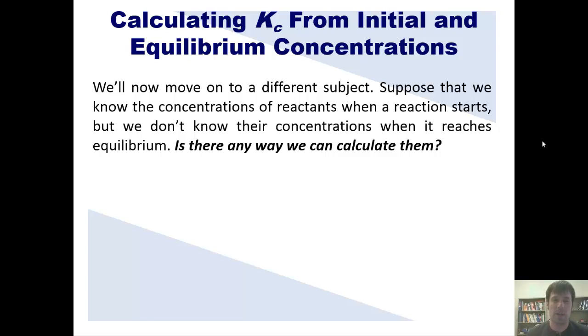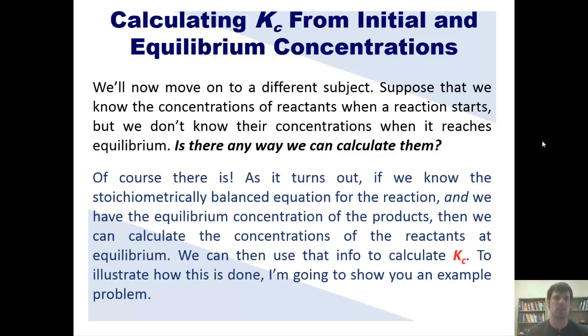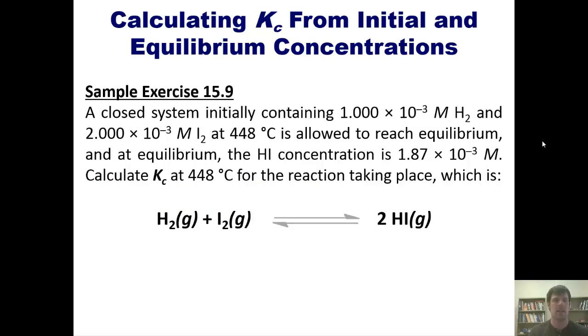I want you to suppose that we know the concentrations of reactants when a reaction starts, but we don't know their concentrations when it reaches equilibrium. Is there any way that we can calculate them? The answer, of course, is yes. As it turns out, if we know the stoichiometrically balanced equation for the reaction, and we have the equilibrium concentration of the products, then we can calculate the concentrations of the reactants at equilibrium. We can then use this info to calculate Kc. To illustrate how this is done, I'm going to show you an example problem on the board.